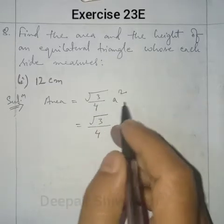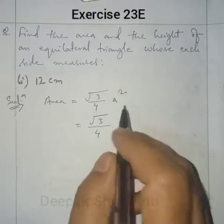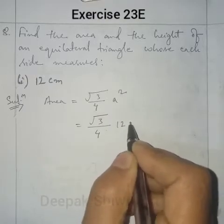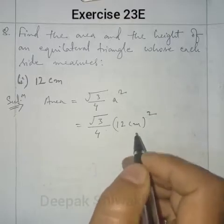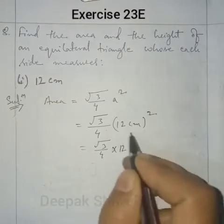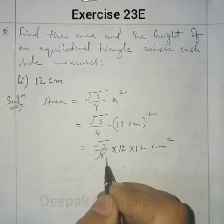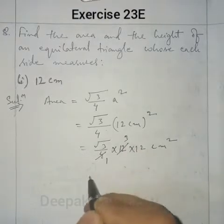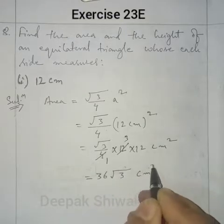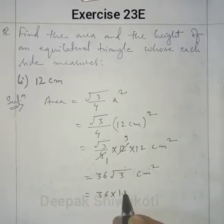You have to remember the value of √3 — sometimes it is given in the question and sometimes you have to apply it yourself. So a is 12, and 12² = 12 × 12. Root 3 by 4 into 12 squared gives us 36√3 cm².